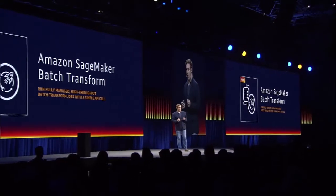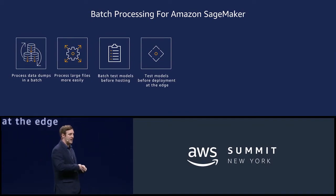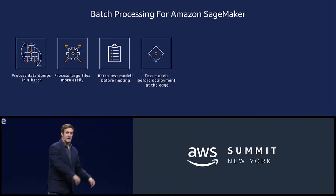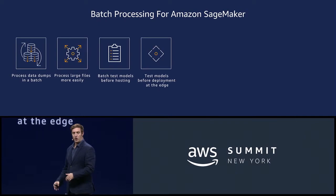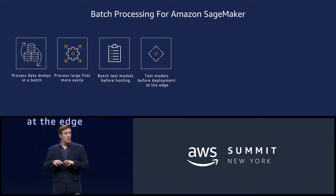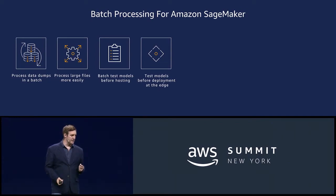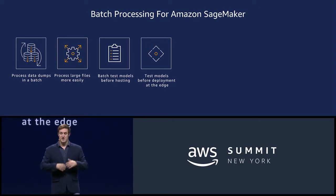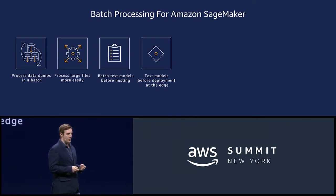SageMaker Batch Transform provides fully managed, high-throughput batch transform jobs with a simple API call. You can process data dumps in a batch — if you have new billing inventory or a whole bunch of product sales, you can take that at the end of the day and run it against your model to start doing predictions. You can also process large files, 5 gigabytes and up, much more easily without chunking them. Many customers also use this to test their models — running a test set through as a sanity check before rolling into production via A/B test.